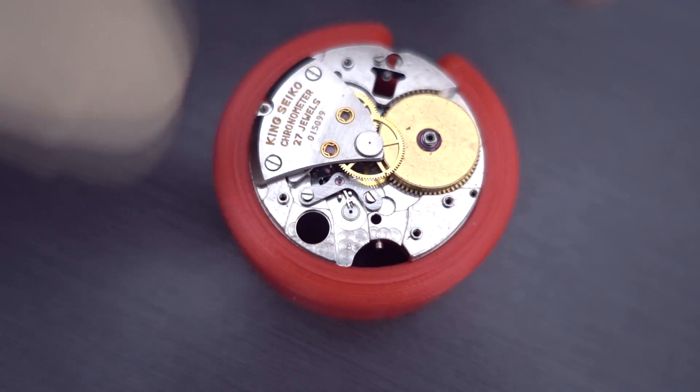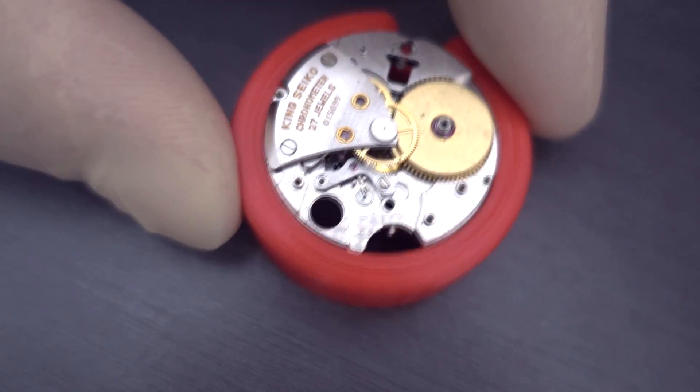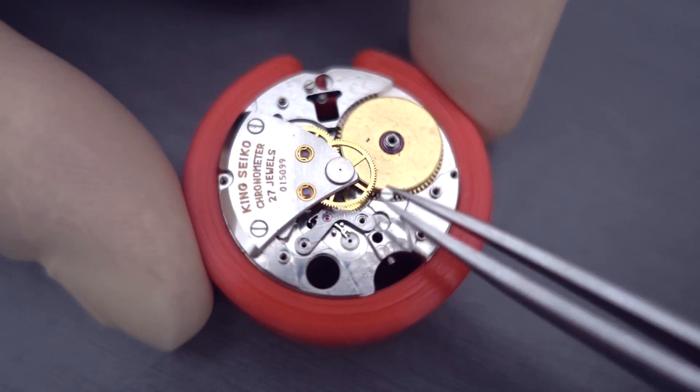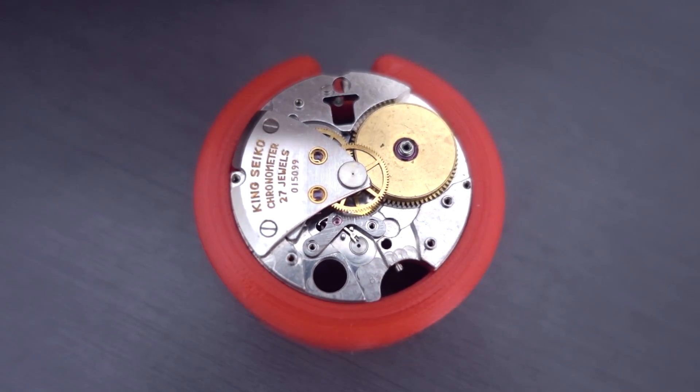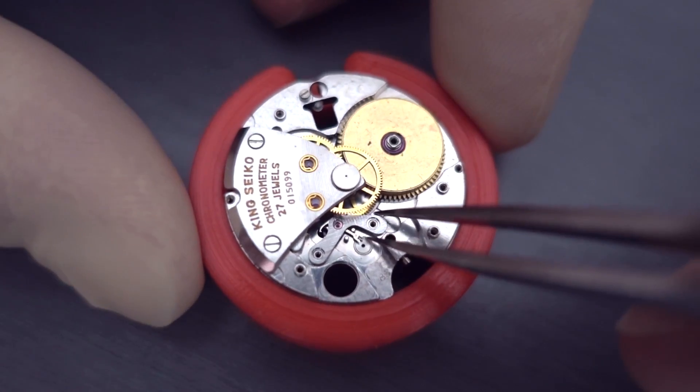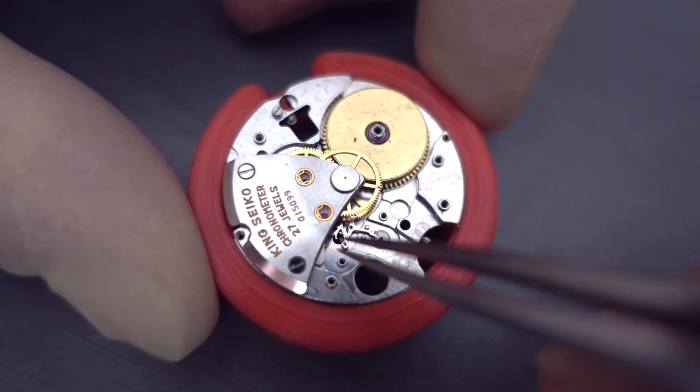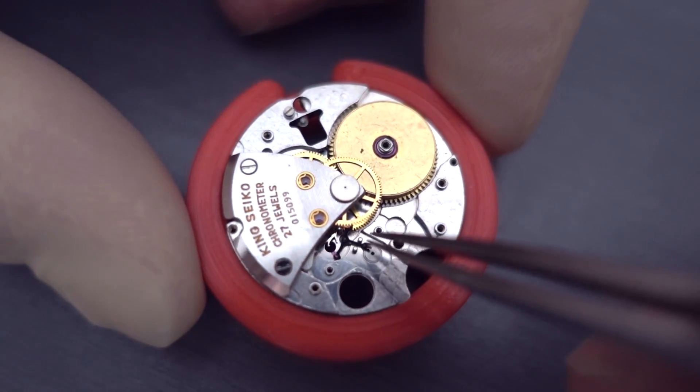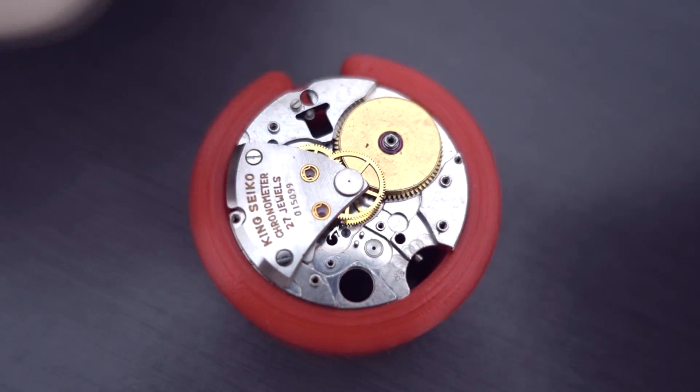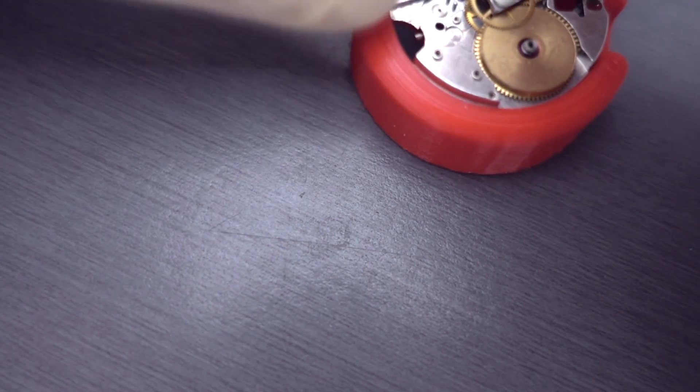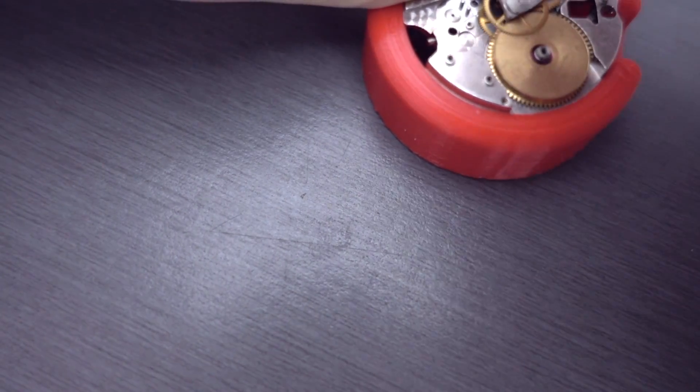I'm just removing the pallet cock there. And hopefully this will come off a bit easier than some of the other parts. And now we're going to remove the pallet fork. And the final train bridge. I'm just going to tap that off now. Again the screws were quite tight here. So I've just taken it off to the side. Just to make sure that I don't damage the screws or mark the plate or anything like that.